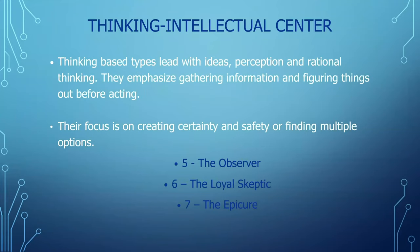Our thinking or intellectual centers — the thinking-based types — lead with ideas, perception, and rational thinking. They emphasize the gathering of information and figuring things out before acting. Their focus is on creating certainty and safety or finding multiple options, as we'll see in our Fives, Sixes, and Sevens.